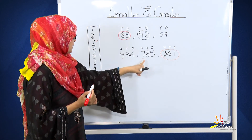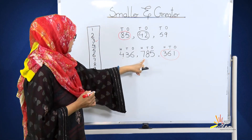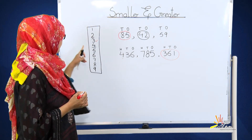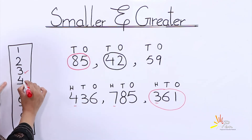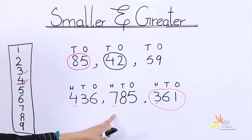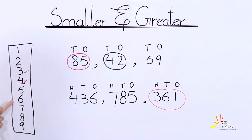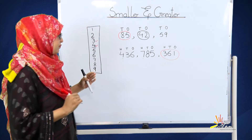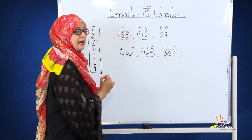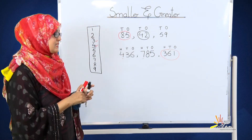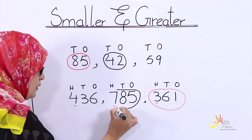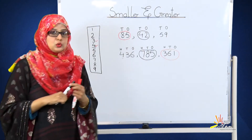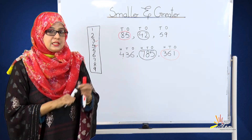Now we will look at the remaining numbers: seven and four. We found four here, but we have one more number — five, six, seven — we found seven at the end. So we can say that seven hundred and eighty-five is the greater number. It's easy, right?